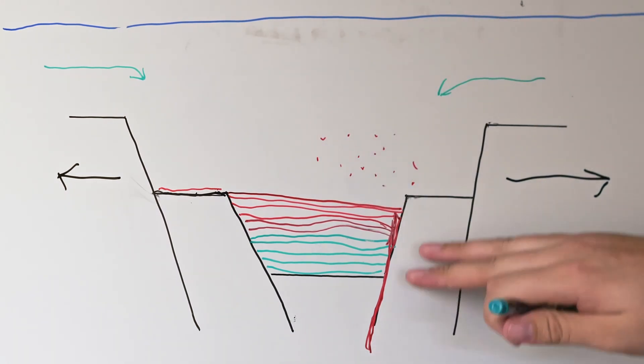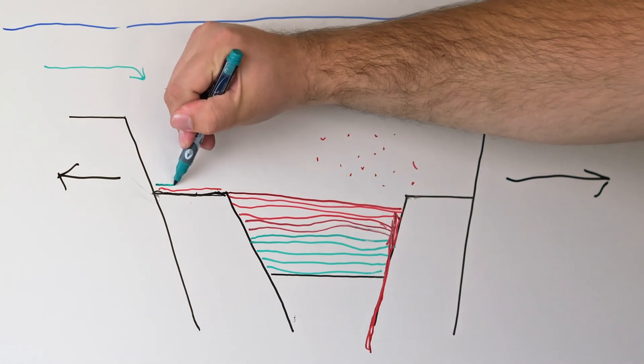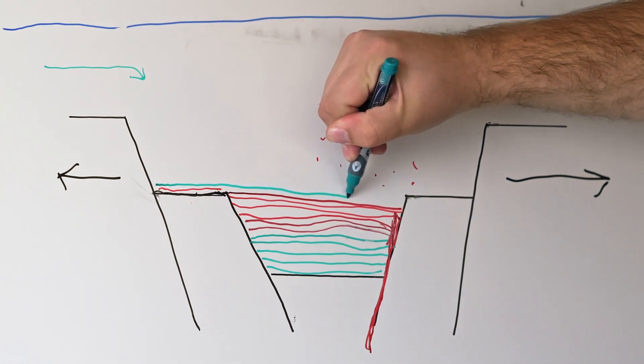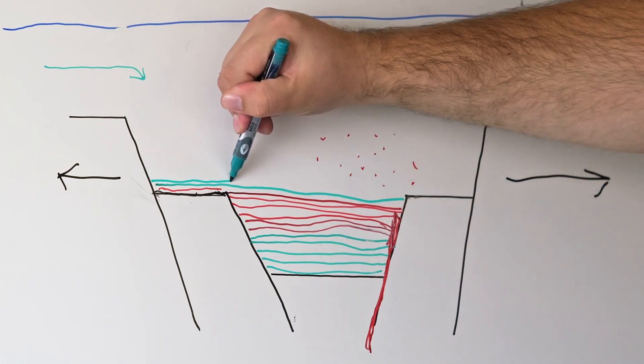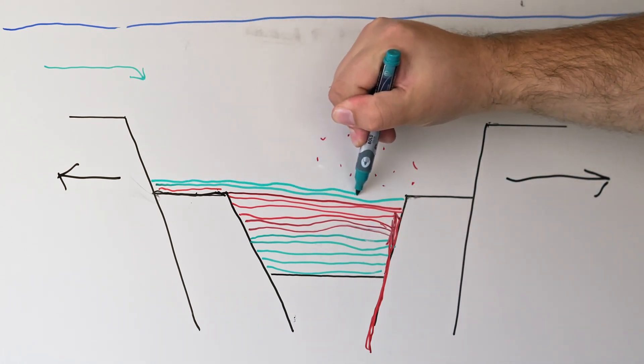Eventually, the mineralizing fluids are cut off from the source and regular sedimentation continues. So we have our main red ore band that is then slowly covered again by unmineralized sediments.